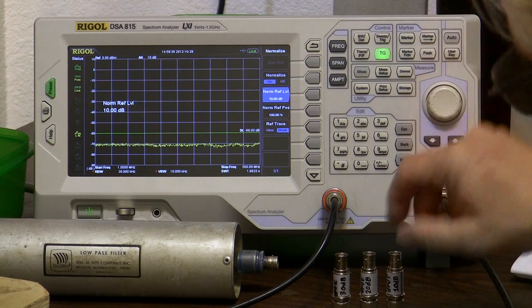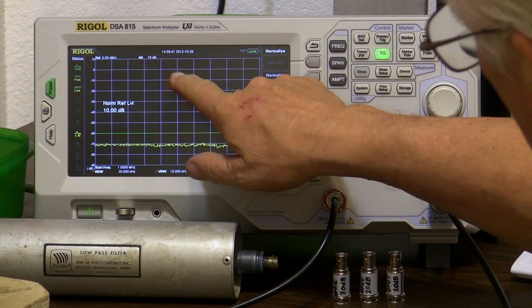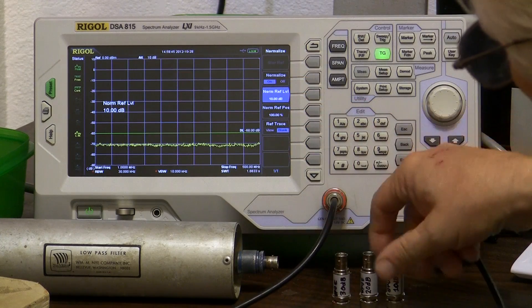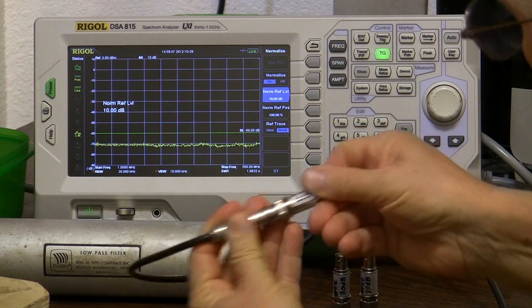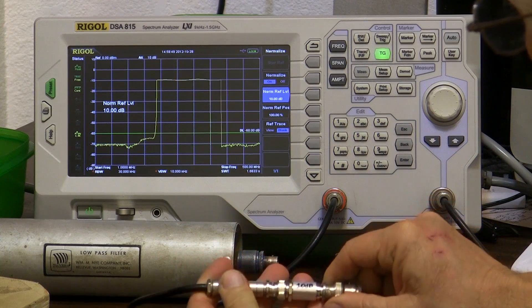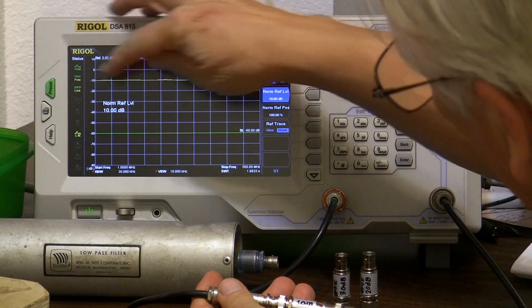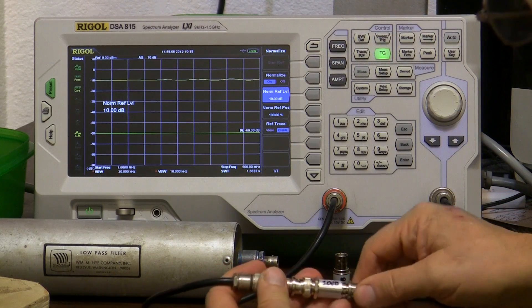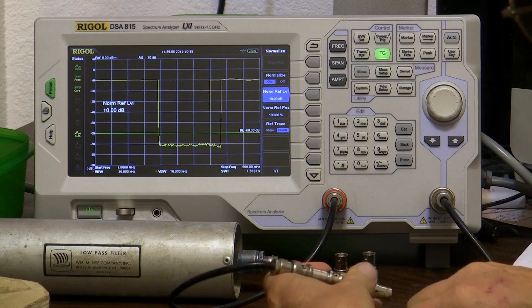So if I was to take a 10 dB pad, you'd expect that this would show 10 dB down. I'll do that here. Okay, there's 10 dB, a little bit of ripple on it but not much, half a dB or something. Not certain. So we're good there.